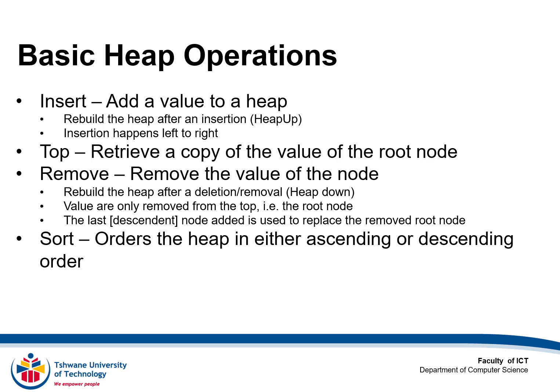The next operation is top, which is to receive a copy of the root node. This is important because it supports the remove operation. With heaps, you remove a value only from the root node. After removing the root node, you have to rebuild the heap — this is called heap-down. Once you remove the top node, you replace it with the last added node, the very last descendant, and then re-heap from the top so that new root finds its proper location.